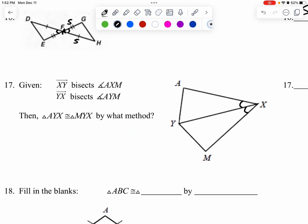I'm going to do the same thing for the other side. I have YX, which is this, bisecting AYM.